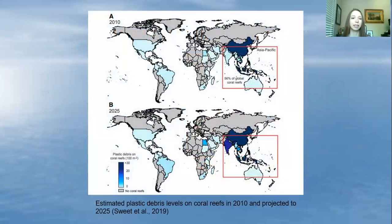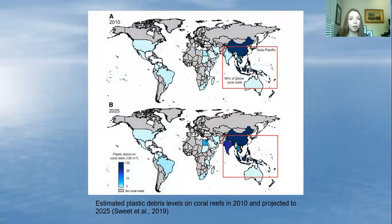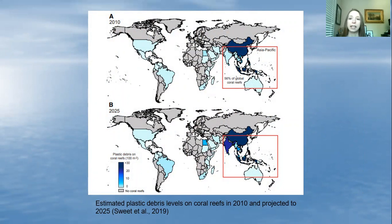Here is a map from a United Nations Environment Programme report. On the top you see the estimated levels of plastic debris in 2010, and in the red box is the Asia-Pacific Reef Area, home to 55.5% of coral reefs. You can see how much that increases from 2010 to 2025, especially in those areas — look how much darker India got. That is pretty scary.